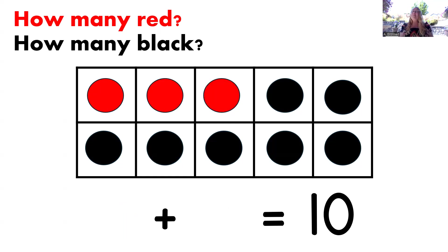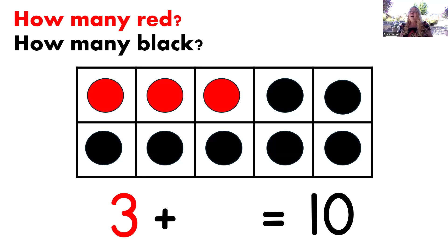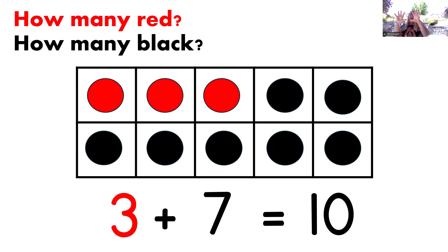How many dots are red now? That's it, three. And how many dots are black? You got it, seven. Now let's read that equation: three plus seven equals 10. Wonderful.